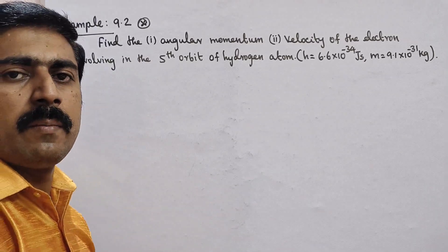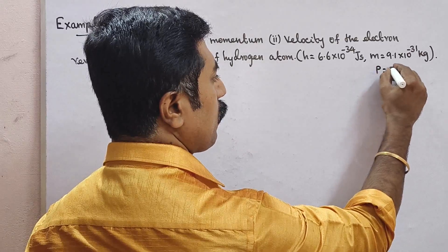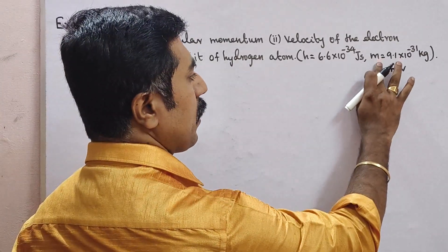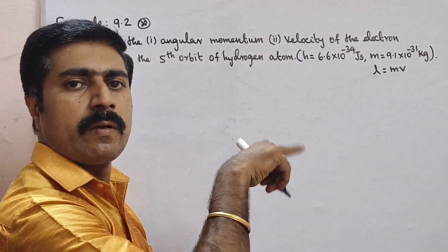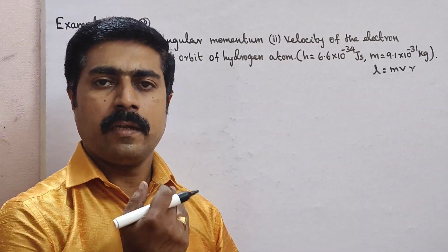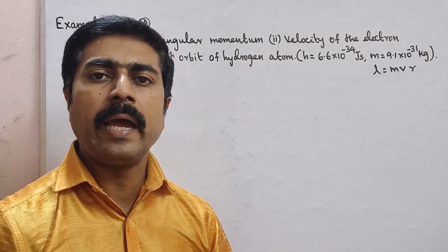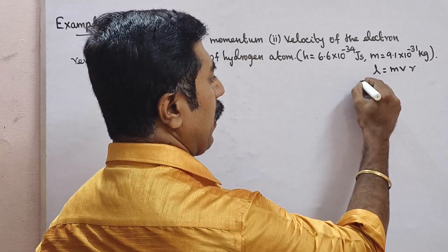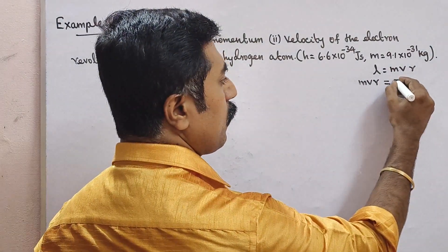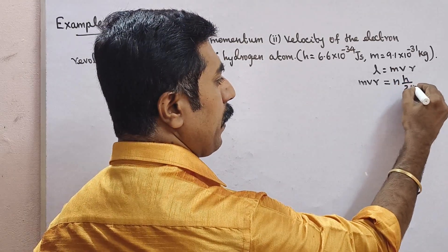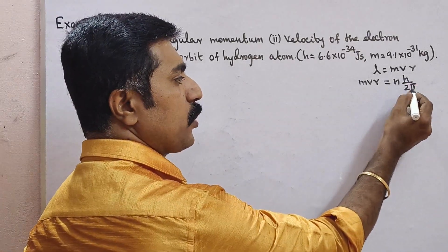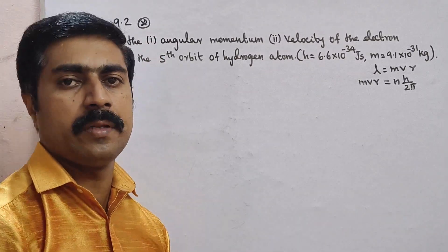Momentum formula: P is equal to mv, mass into velocity. Angular momentum - the notation is L. At a particular angle, it depends on the radius of the orbit. This is the angular momentum formula. From Niels Bohr's atom model, angular momentum mvr of a revolving electron is equal to an integral multiple of H by 2π.